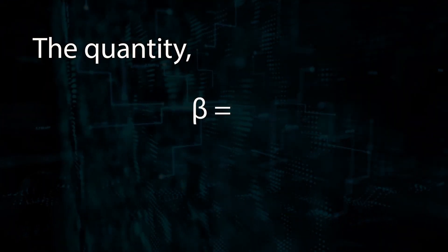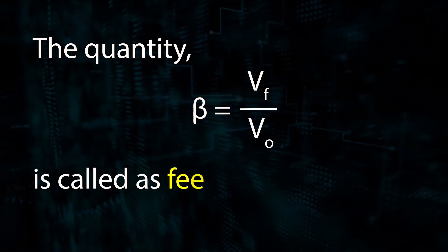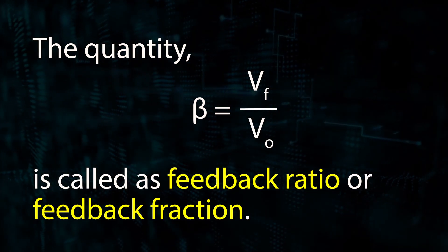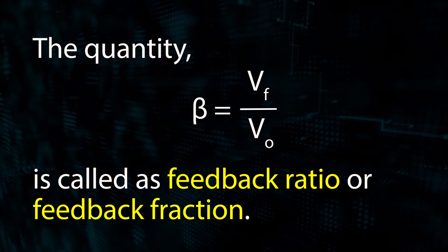The quantity beta equal to Vf divided by Vo is called the feedback ratio or feedback fraction.